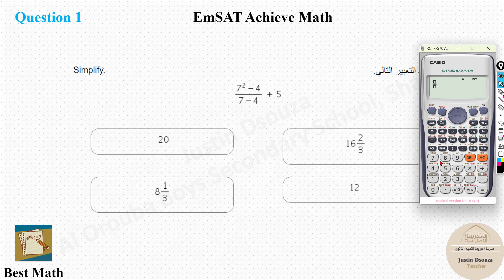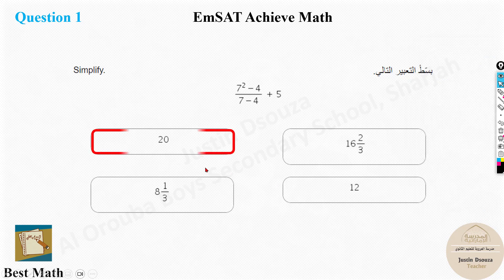For Question 1, all you need to do is type the question as it is. It's 7 squared minus 4, divided by 7 minus 4, plus 5. This is a fraction and this is a whole, and the answer is 20.